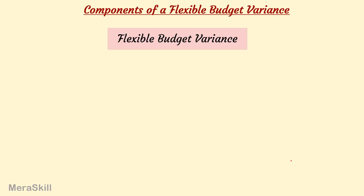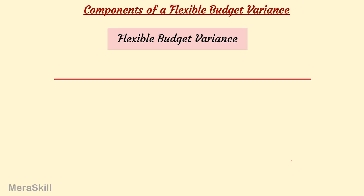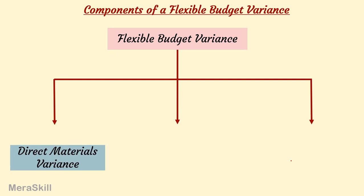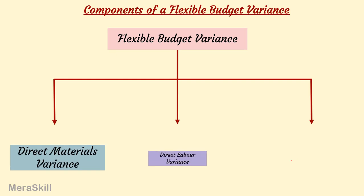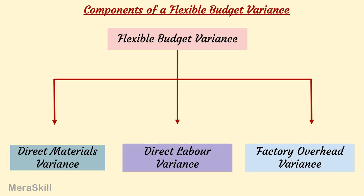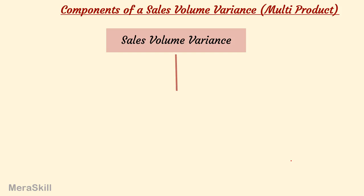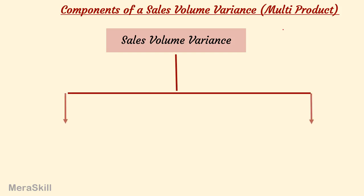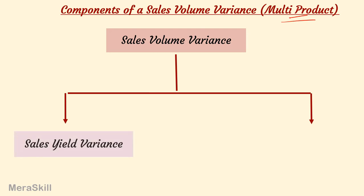The components of a flexible budget variance consist of the direct material variance, the direct labor variance, and the factory overhead variance — we will discuss each of these. These are the flexible budget differences. And the sales volume variance, when it involves multiple products, would be broken down into the sales yield variance and the sales mix variance.